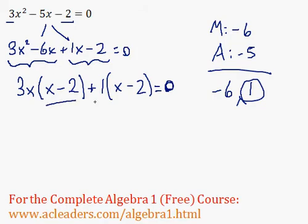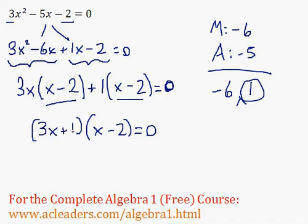Now we have a repeating term, x minus 2, which we only really need to write once, and we have 3x plus 1. So in factored form, we have 3x plus 1 times x minus 2 equals 0.